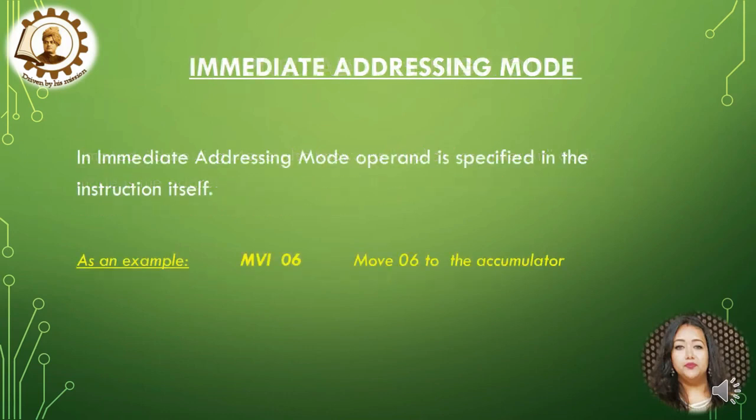In immediate addressing mode, the operand is specified in the instruction itself, such as MVI 06, which means move 06 to the accumulator.